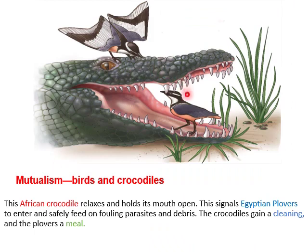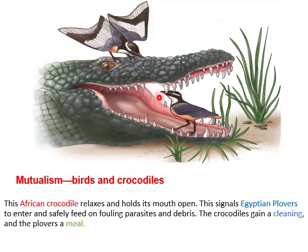Let's discuss another example of mutualism: birds and crocodiles. This African crocodile relaxes and holds its mouth open, signaling Egyptian plovers to enter and safely feed on parasites and debris. The crocodile gains a cleaning and the plovers gain a meal.